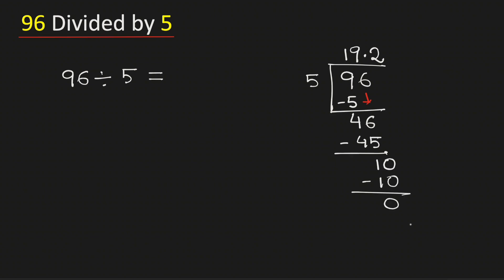As we have obtained the number 0 and we have no number to bring down here, so we will stop. Therefore 96 divided by 5 is equal to 19.2 and this is our final answer. Thank you for watching.